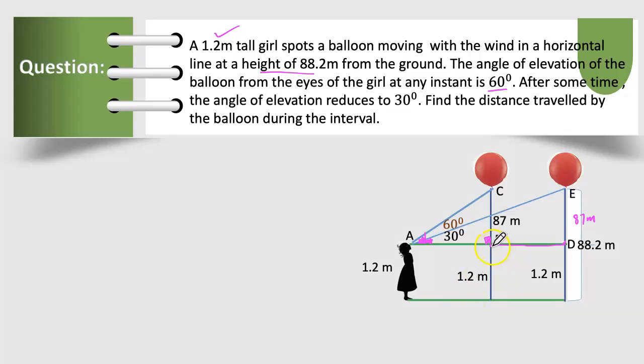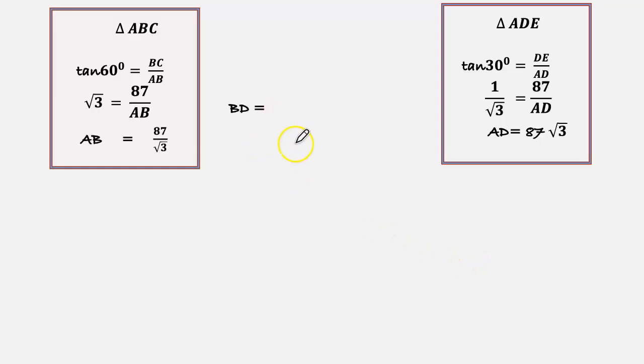We have to find the distance from B to D, BD. So AD minus AB. Let's work out. BD equals to AD minus AB.